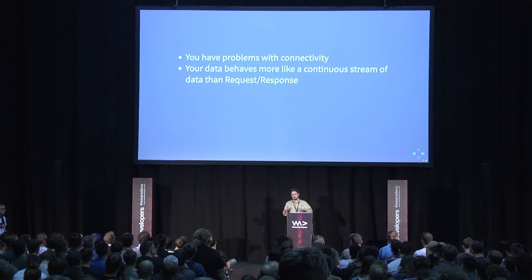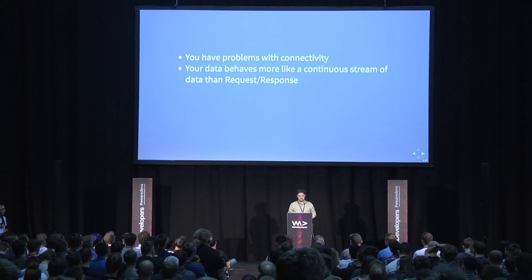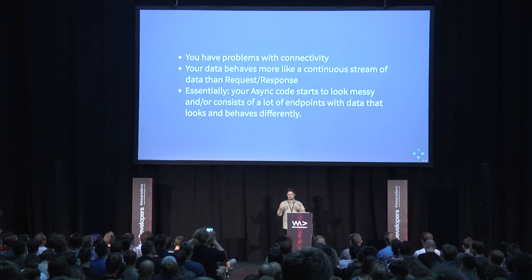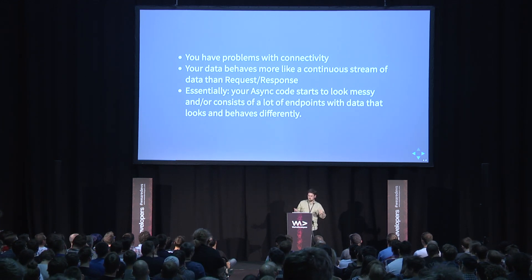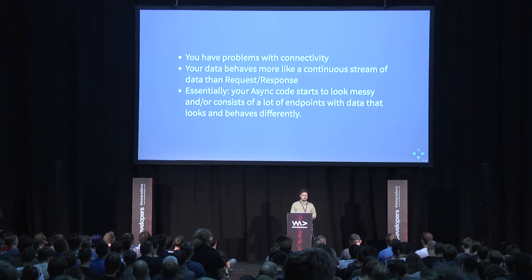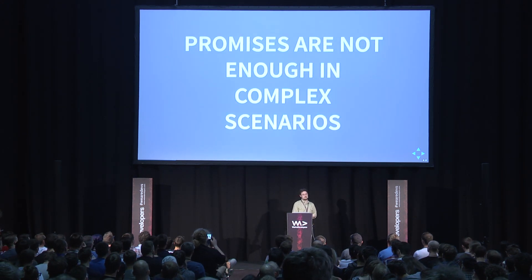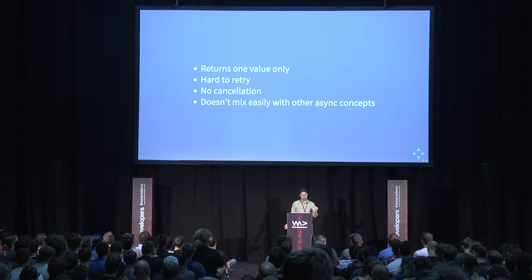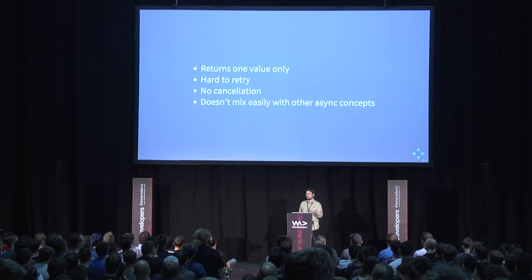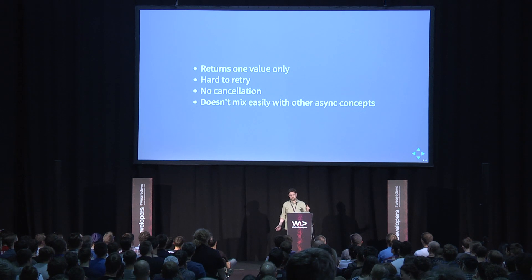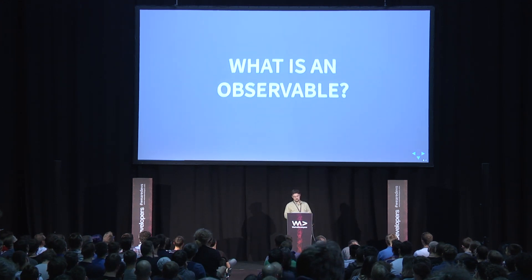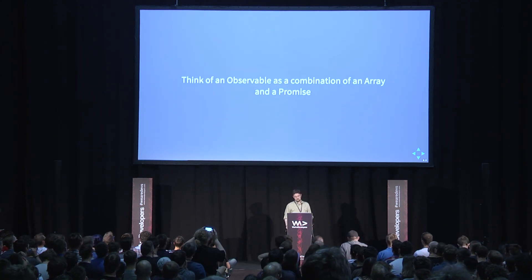If your application has streams being merged together that come at different intervals and are more push than pull, then RxJS is the library for you. Promises are just not good enough in complex scenarios because they return only one value, are hard to retry, have no cancellation capacity, and don't mix with other async concepts. That's really one of the selling points of RxJS — turning any async thing into one observable concept.